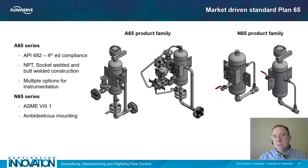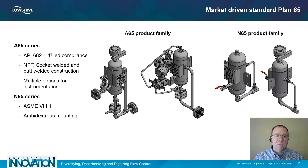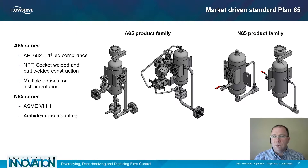The final piping plan we're going to talk about today is the Plan 65 products from Flowserve. Our standard Plan 65s come in two different configurations. The first is the A65 series — a fully compliant API 682 fourth edition piping plan. It comes standard in three different construction options: all-MPT construction, socket welding construction, or butt welding construction. This product family features multiple options for instrumentation. For customers that do not require API 682 fourth edition compliance, we have the N65 series, which is a lower cost general industry duty piping plan designed to ASME Section 8.1. It features ambidextrous mounting configurations and also has a number of different instrumentation options.